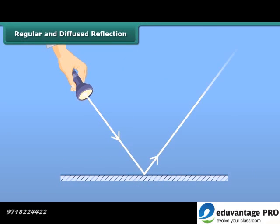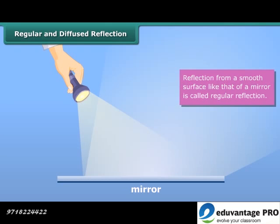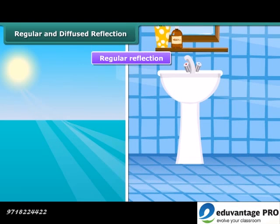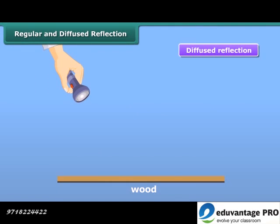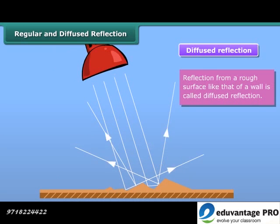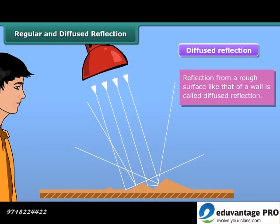Light falling on an object is reflected. Reflection from a smooth surface like that of a mirror is called regular reflection. Images are formed by the regular reflection of light. Diffused or irregular reflection takes place when a ray of light is incident on a rough surface such as a wall or wood, which is not smooth or polished. In this case, the different portions of the surface reflect the incident light in different directions, and an image is not formed. The light sent to our eyes by most of the objects we see around us is due to diffused reflection from their surfaces.